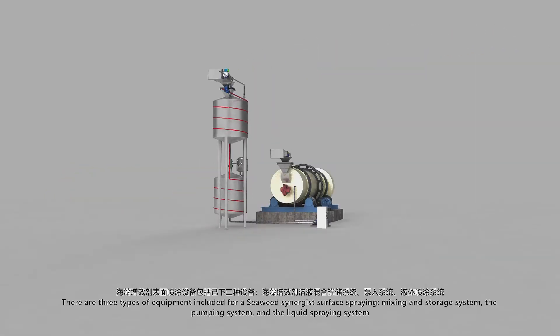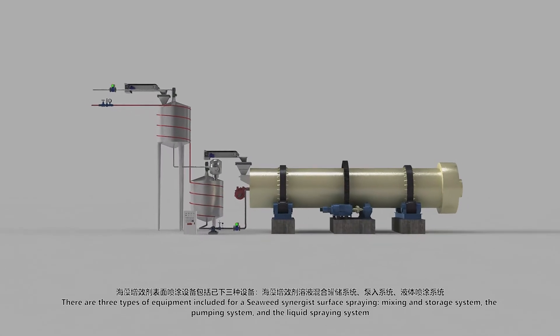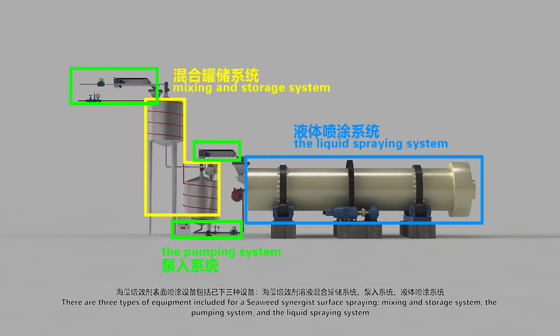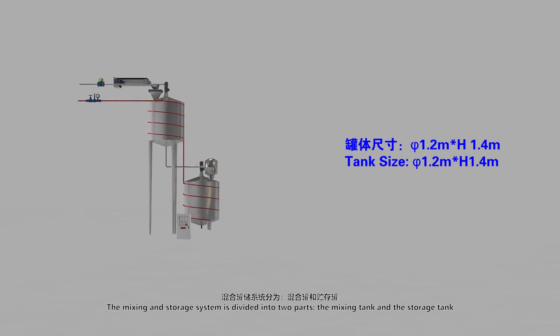There are three types of equipment included for the seaweed synergist surface spraying: the mixing and storage system, the pumping system, and the liquid spraying system. The mixing and storage system is divided into two parts: the mixing tank and the storage tank.